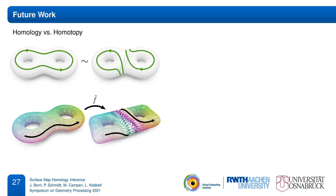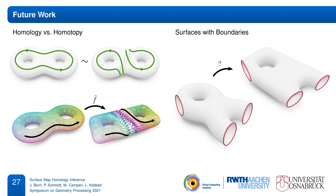While this only matters for somewhat exotic map topologies, it would be desirable to have a full inference in terms of homotopy, which is however much more challenging as it is no longer a linear concept. Also, in its current formulation, our method is restricted to closed surfaces. An extension to surfaces with boundaries would be certainly useful, but there the duality between homology and cohomology no longer exists in this simple form.